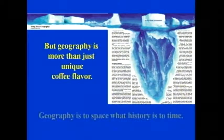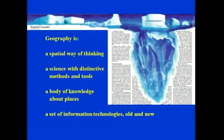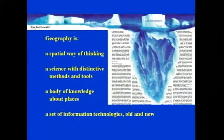But geography is more than just unique coffee flavor. Geography is to space what history is to time. Geography is a spatial way of thinking, a science with distinctive methods and tools, a body of knowledge about places, a set of information technologies old and new. Contrary to what a lot of people think, GIS is not just a new thing — geography has always led in technology, from Eratosthenes measuring the circumference of the Earth forward.